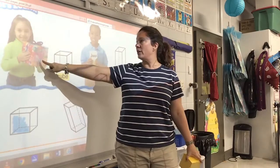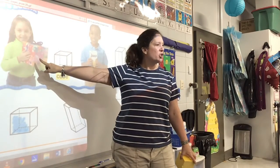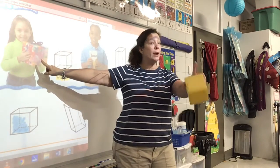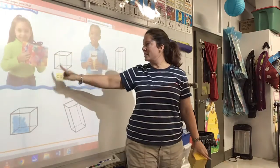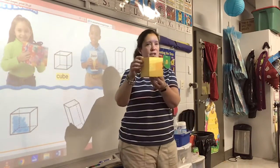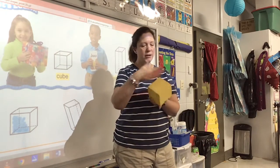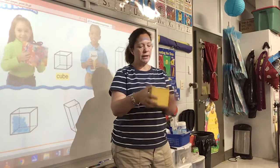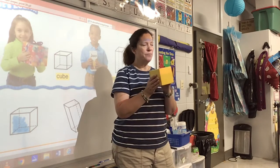Look at what this little girl has in her hand. She has a present that has squares on all of its sides, just like this. I've got a square here, a square here, a square here. There's squares all over.